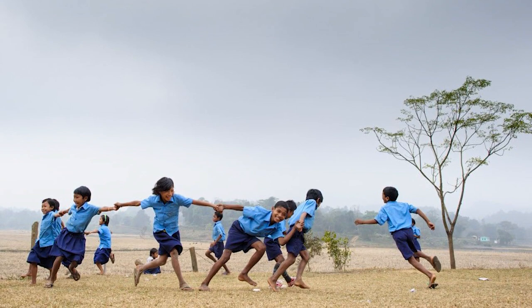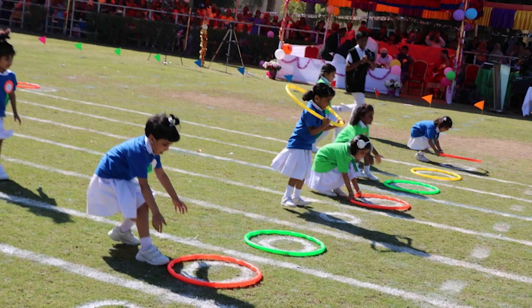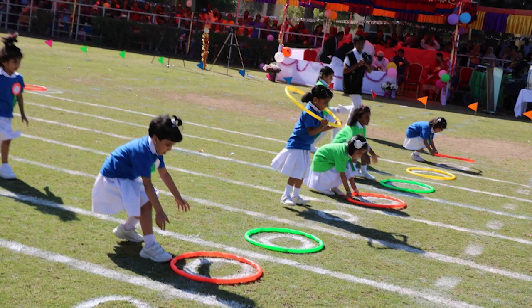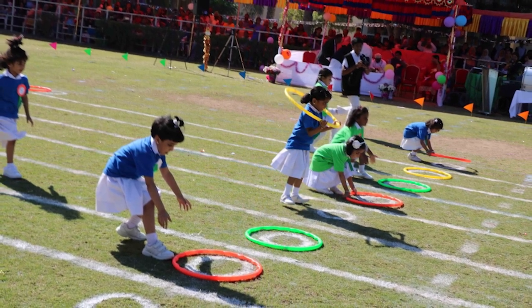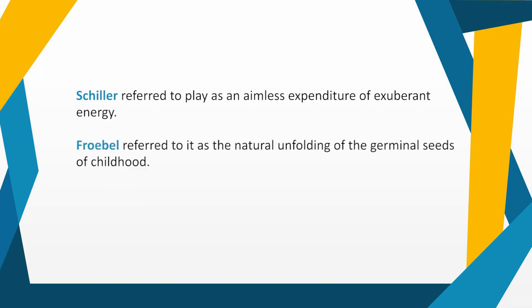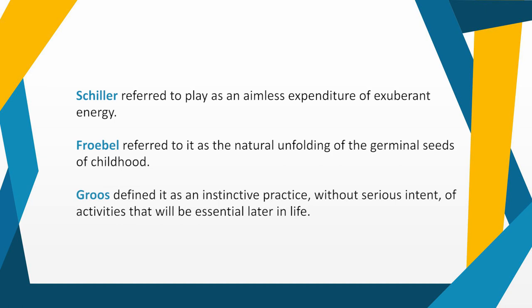Play is considered the most — or even the only — developmentally appropriate way for young children to learn. Schiller referred to play as 'an aimless expenditure of exuberant energy,' while Frobel referred to it as 'the natural unfolding of the germinal seeds of childhood,' and Groos redefined it as 'an instinctive practice without serious intent of activities that will be essential later in life.'